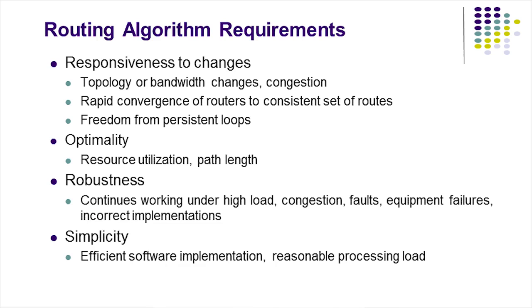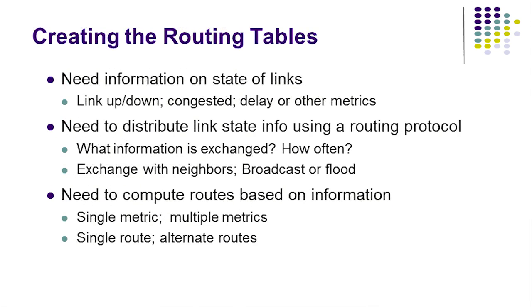In general, a routing algorithm should seek one or more goals, such as rapid and accurate delivery of packets, adaptability to changes, robustness, and low overhead. Once the routing algorithm has determined the set of paths, the path information is stored in the routing table so that each router knows how to forward packets. Creating a routing table requires information on the state of links, distributing link state information, and computing optimal routes based on link state information.